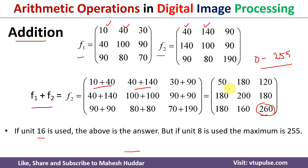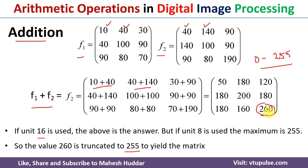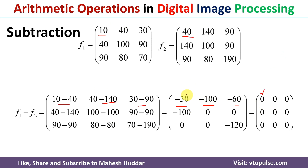We cannot have negative pixel values, so whenever we get a negative value we need to convert it to 0. Similarly, as mentioned earlier, any value greater than 255 must be truncated to 255 for 8-bit images. If 16 bits are used, then 260 is a valid number and no truncation is needed. So minus 30 becomes 0, minus 100 becomes 0, and so on.